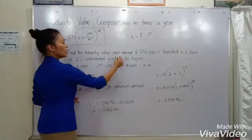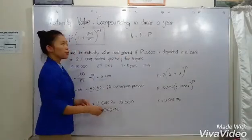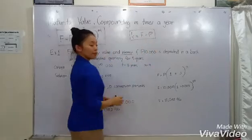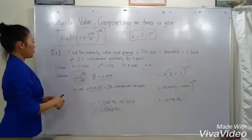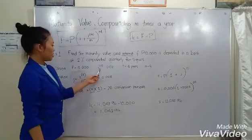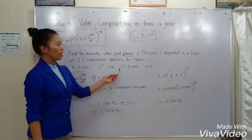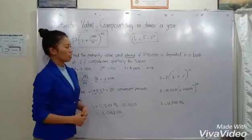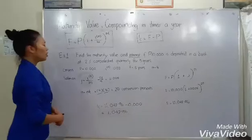To get the compounded interest, you'll just have to minus the principal from the maturity value. For the given, we have P equals 10,000, the nominal rate of interest 0.02, the time as 5 years, and the frequency of conversion equals 4.